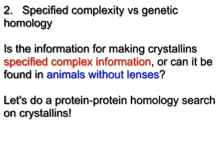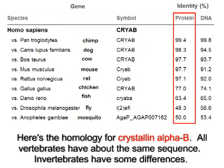Specified complexity versus genetic homology: is the information for making crystallins specified complex information, or can it be found in animals without lenses? Let's do a protein-protein homology search on crystallins. Here's the homology for crystallin alpha-B. All vertebrates have about the same sequence.